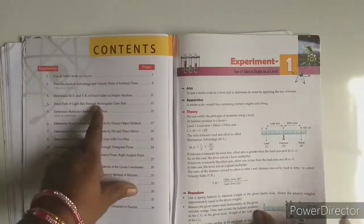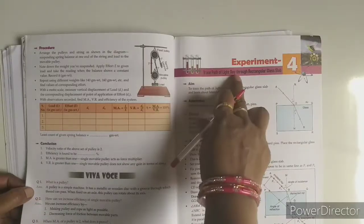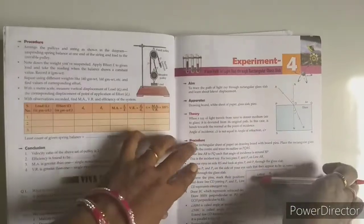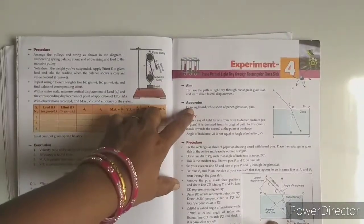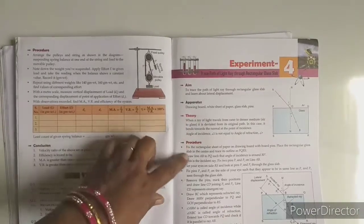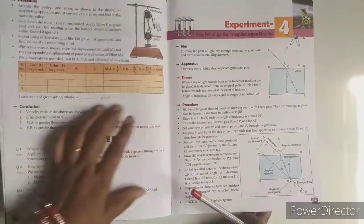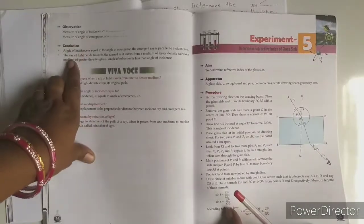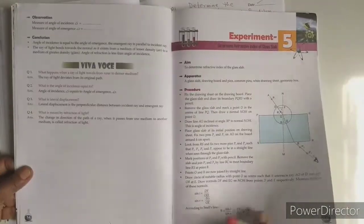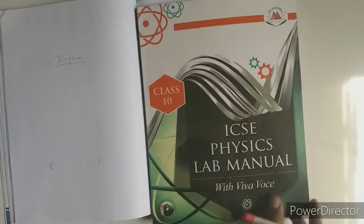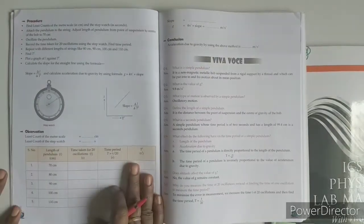This is the class 10 lab manual. For example, the experiment on tracing the path of light through a rectangular glass slab — at the top, write the aim, then apparatus required, then the theory. The diagram always goes on the white page. Then write the observation and conclusion. The format is the same for both class 9 and class 10.